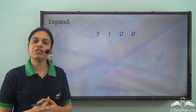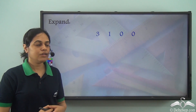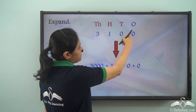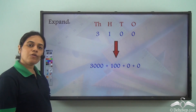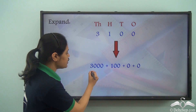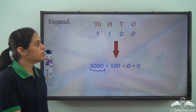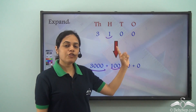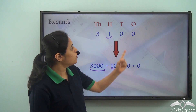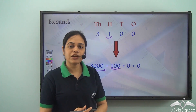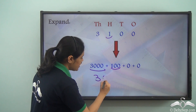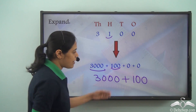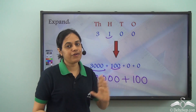Now, can you tell me what is the expanded form of this number — three one zero zero? Ones place, tens place, hundreds place, thousands place. The place value of three is three into thousand — that is three thousand. The place value of one is one into hundred — that is one hundred. The place value of zero is zero, and again zero into anything is zero. So I can write this as three thousand plus one hundred. Whenever I have zeros, I can just skip writing those zeros.